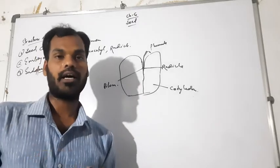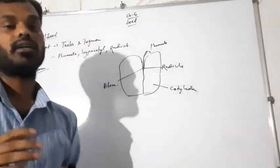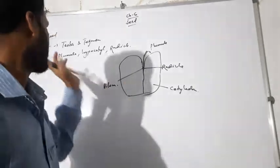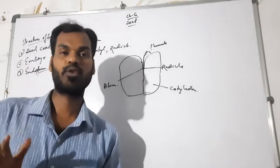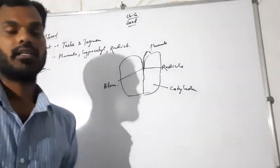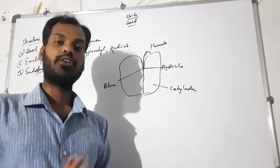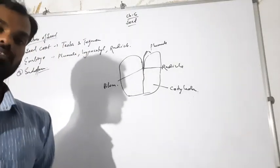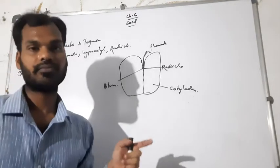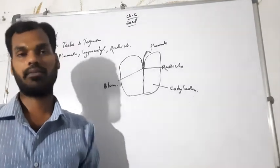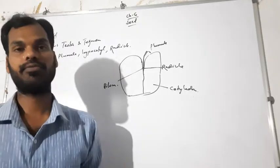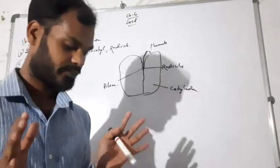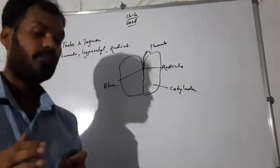Once roots are established, there is no further use of the endosperm. However, in some fruits — even after the plant has matured — the endosperm remains. For example, the coconut water you drink is the endosperm of the coconut. Even after the fruit is developed and the plant is growing, you are still getting endosperm. So in some plants this situation can be present.